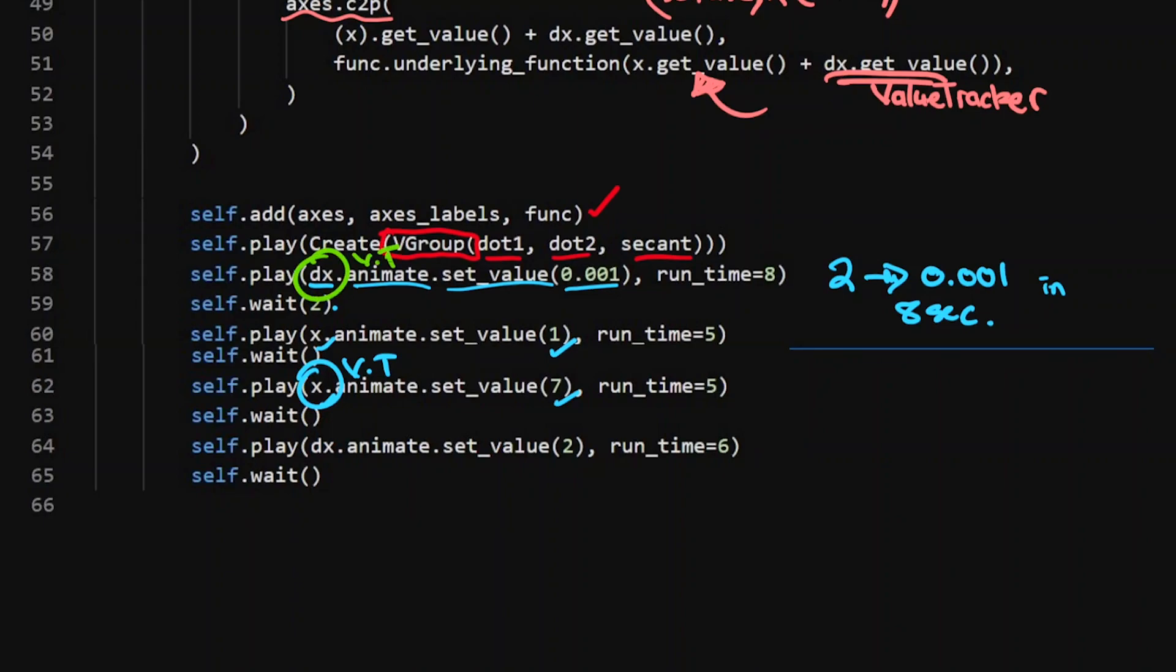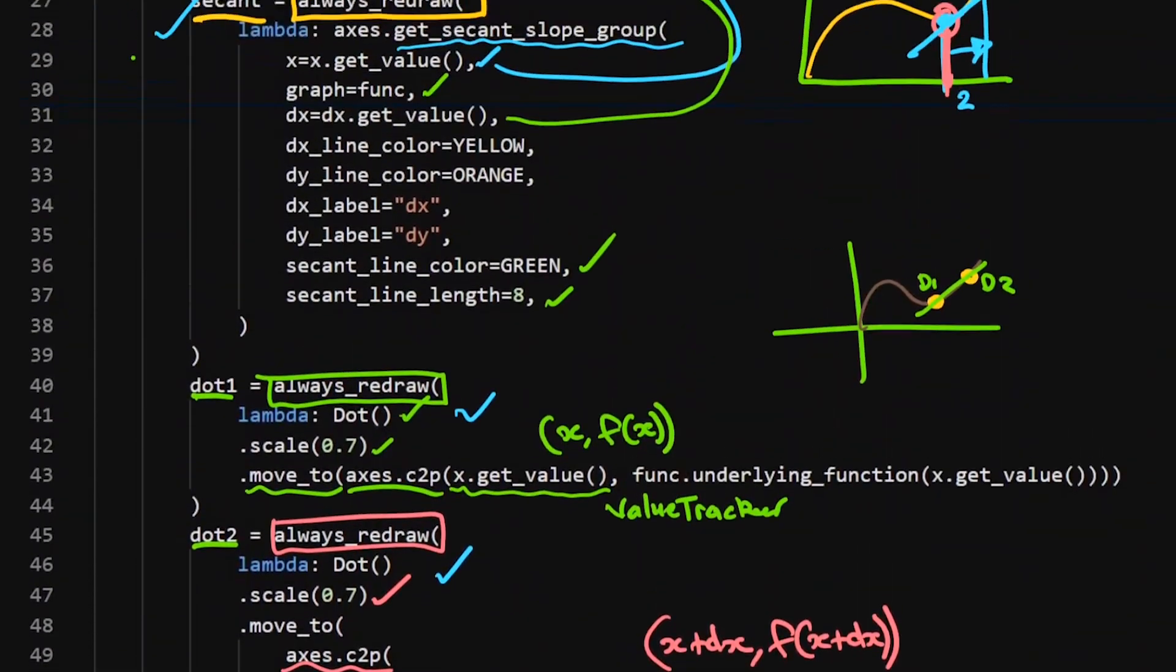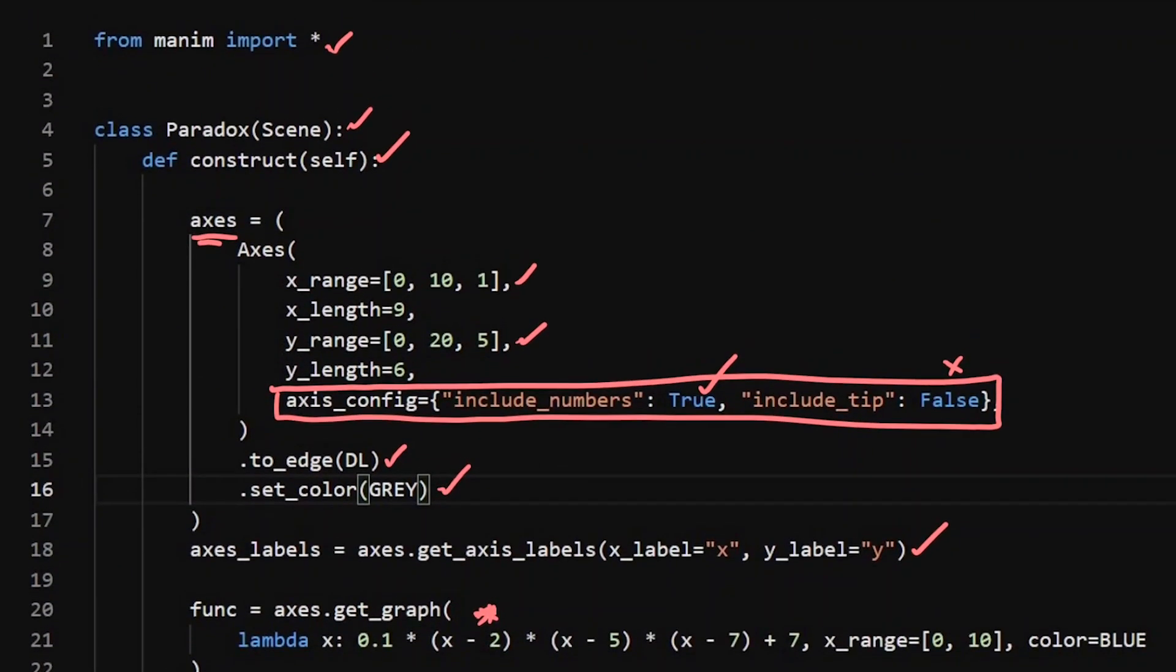And then again, I finished it off with dx, animate it and set it back to the value of two. So you can play around with these values however you want, which is really cool to give the illusion off for a particular calculus animation.